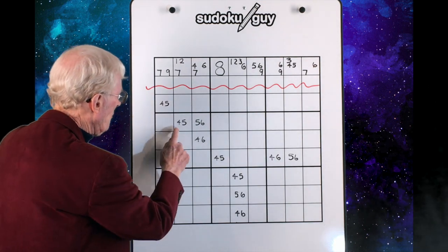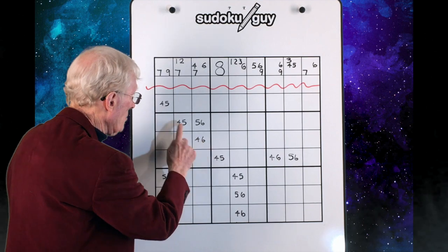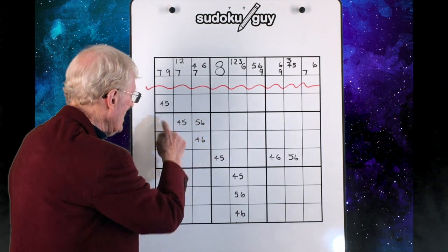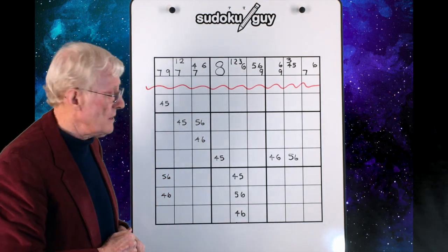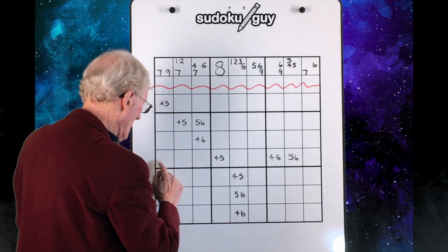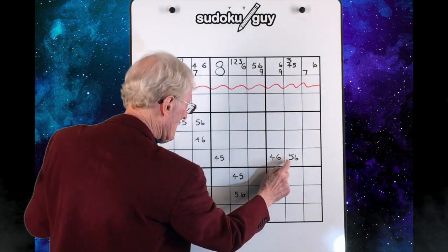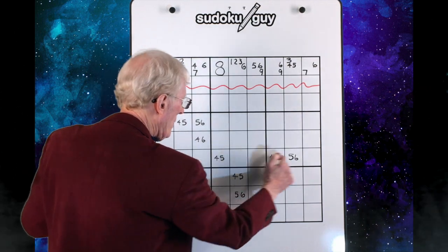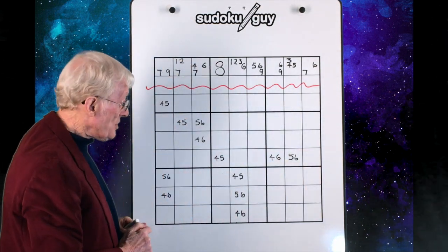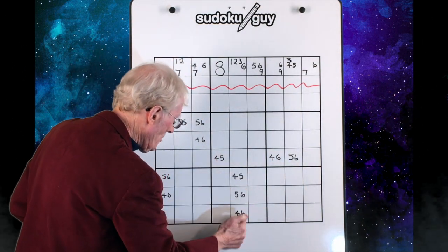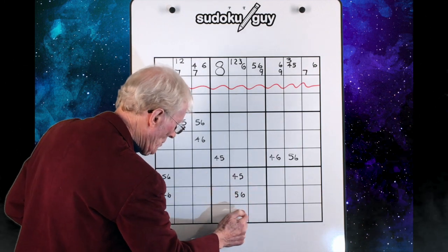In this case, we have 4, 5, 5, 6, 4, 6, only 3 numbers, and it occurs in a block. In this case, we have in a row, we have 4, 5, 4, 6, 5, 6 in a row. In this case, we have it in a block but vertically: 4, 5, 5, 6, 4, 6.